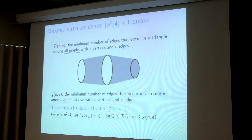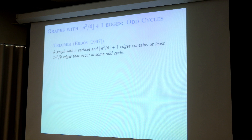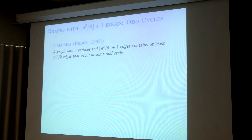So this is for triangles. And because in the title I said odd cycles, we should look at the longer odd cycles. I will show that a graph with n vertices and exactly n²/4 + 1 edges can have at least 2n²/9 edges that occur in some odd cycle — any odd cycle, triangle, C5, C7, any odd cycle.